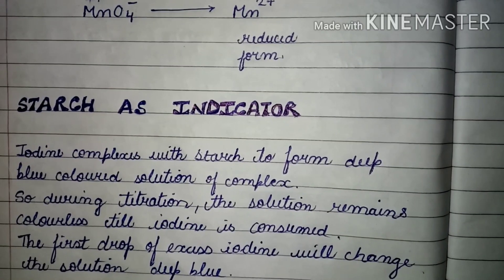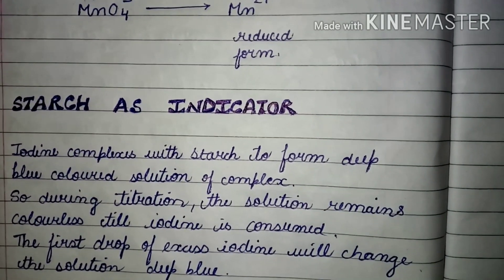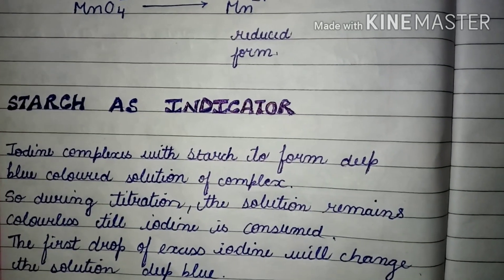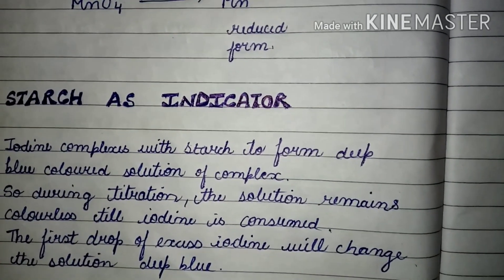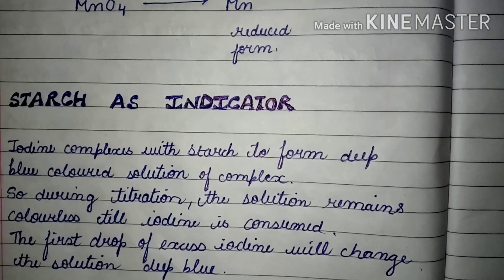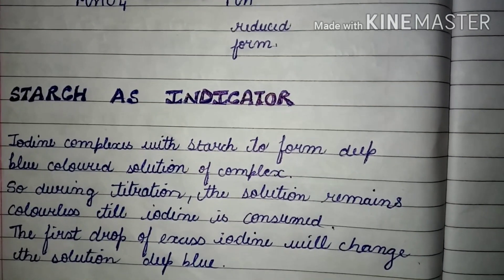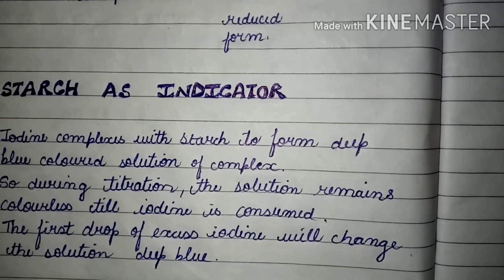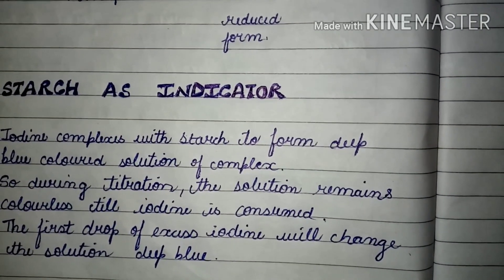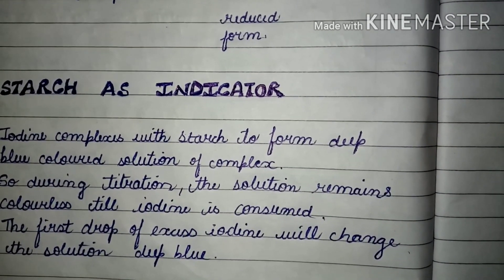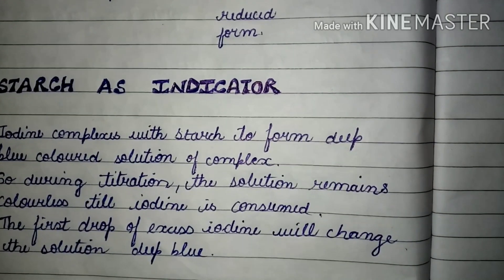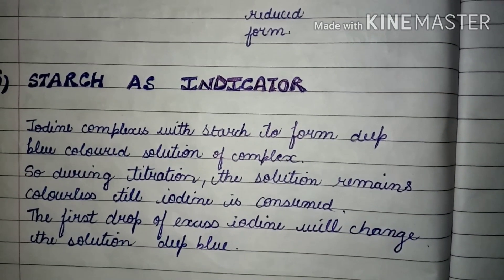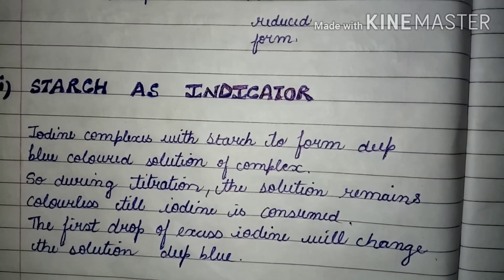This type of starch indicator is used in titrations where iodine is the titrating agent. Iodine complexes with starch to form a deep blue color solution, indicating the endpoint. During the titration the solution remains colorless until the iodine is consumed; the first drop of excess iodine turns the solution deep blue, indicating the endpoint.